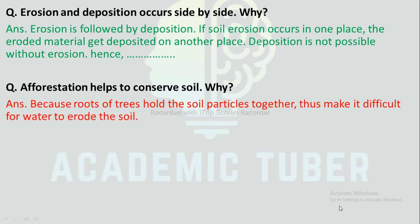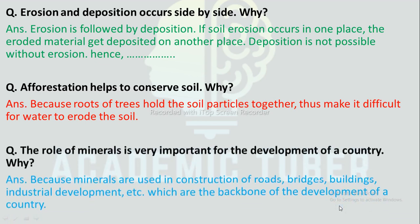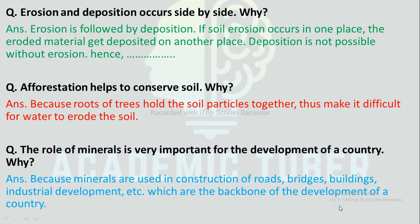Reasoning question: Why does afforestation help to conserve soil? Answer: Afforestation helps to conserve soil because the roots of trees hold the soil particles together, making it difficult for water to erode the soil.